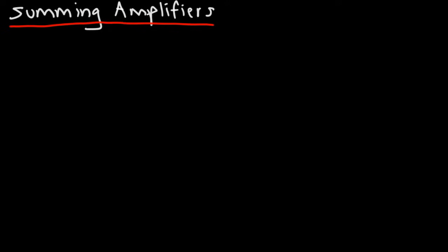In this lesson, we're going to focus on something called summing amplifiers. In order to create a summing amplifier circuit, we're going to use the 741 op-amp device. A summing amplifier is basically an op-amp circuit that produces an output voltage that is proportional to the sum of all of the input voltages.